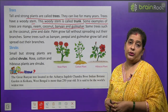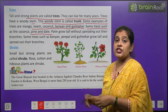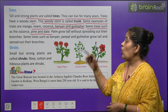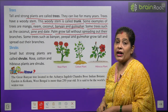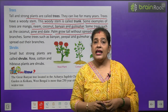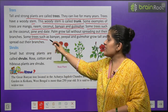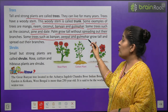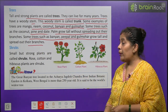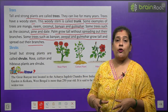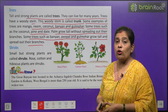Some trees such as coconut, pine, and date — date means khajoor — these palm trees grow tall without spreading out their branches. They grow tall but do not spread their branches. Some trees such as banyan, peepal, and gulmohar grow tall and spread out their branches — branches means shaakhayein — they spread their branches wide.